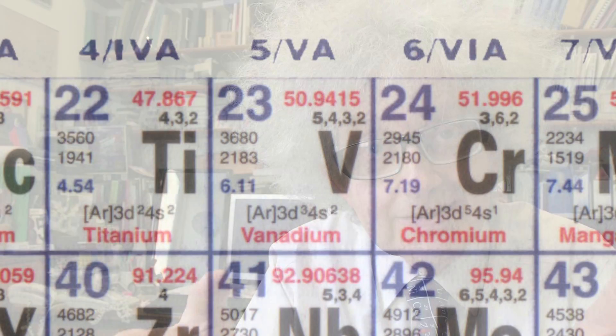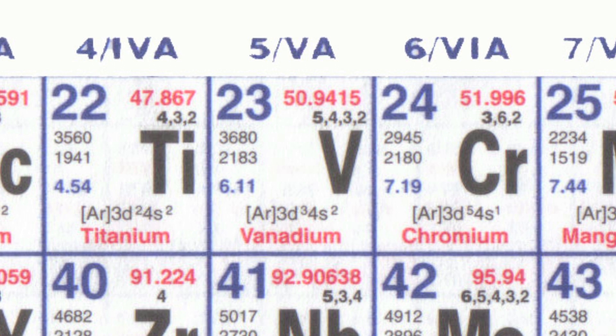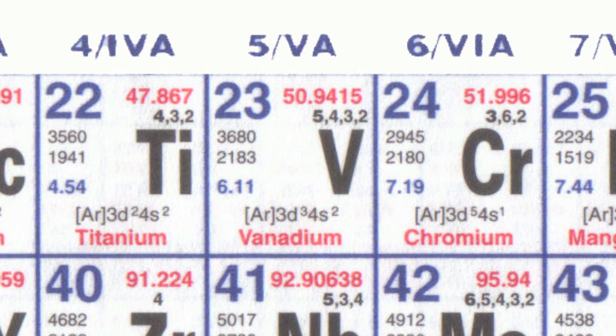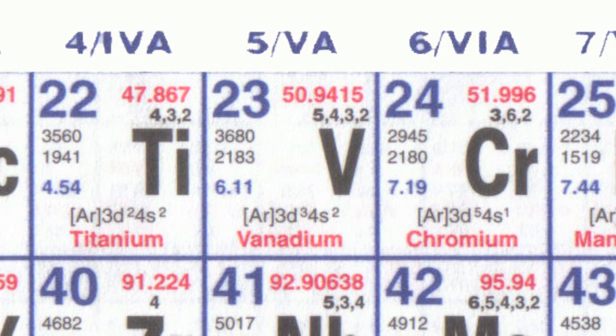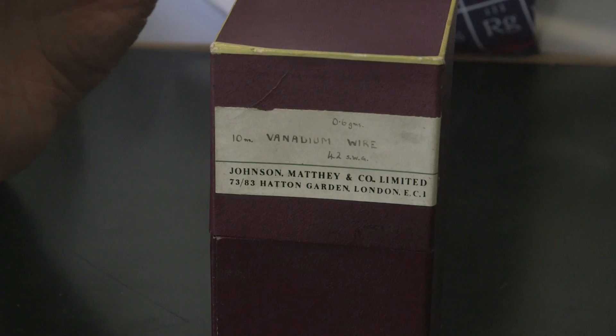Vanadium, element number 23, the third of the so-called transition metals. It lies between titanium and chromium in the periodic table. I don't know a huge amount about the chemistry of vanadium. I've never actually seen vanadium metal, so let's have a look at it.